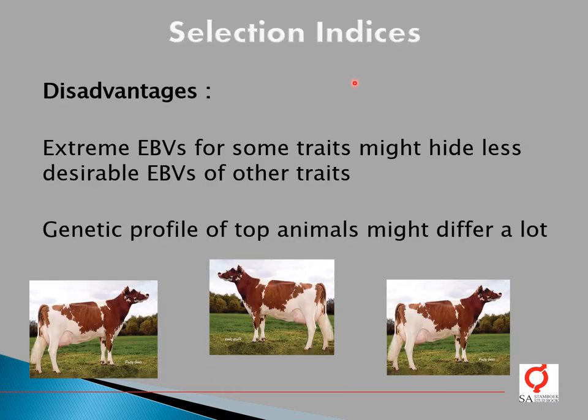These are the most important selection indices in the dairy industry in South Africa. Remember, all traits included in the selection indices are EBVs — specifically BLUP EBVs, not based on phenotype. They are based on multiple trait models, so the genetic correlations are also taken into consideration in these EBVs.